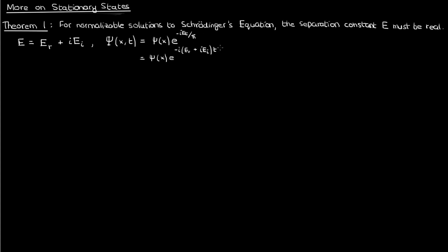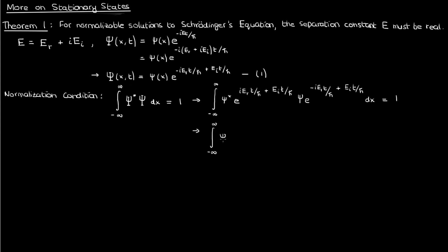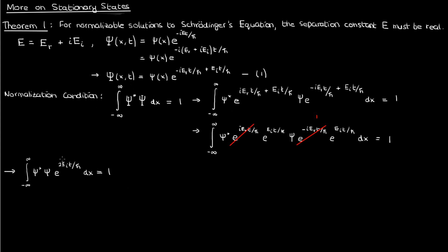The wave function ψ is given by small ψ(x) times the time function — the exponential of negative i times E times time over ℏ. If we substitute the equation for the complex E and expand out the term in the parentheses, we get equation 1. The normalization condition states that the integral over the real line of ψ* times ψ must equal 1. Substituting ψ and ψ* from equation 1, we split the exponential terms: the two exponentials with the imaginary number multiply out to 1.